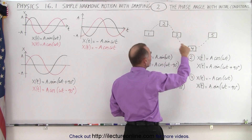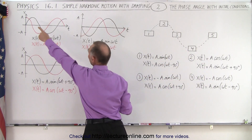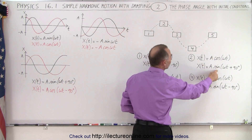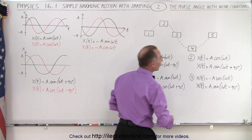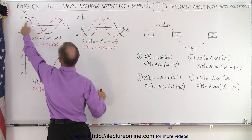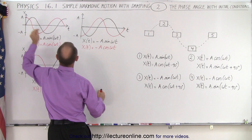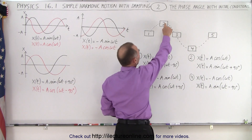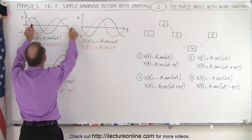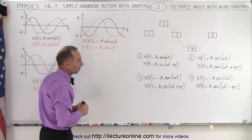If the object is already at the maximum height, we use the cosine function because it starts at the maximum distance away from equilibrium. Or we could use the sine function with a plus 90 degree phase angle, because plus 90 degrees means we take the sine function and start 90 degrees later — in other words at the highest point. We can think of taking the curve and moving it to the left 90 degrees to start at the very top.